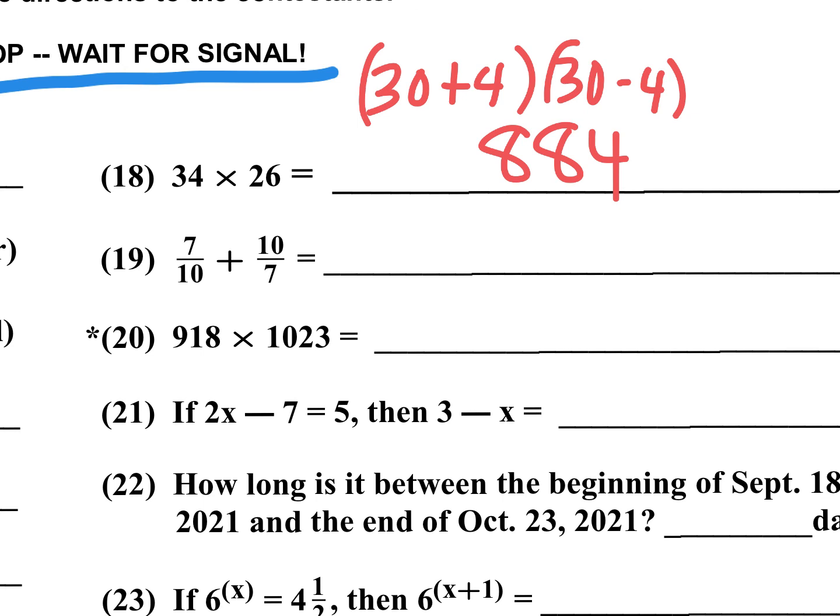Number 19 is a special shortcut. Whenever you have a number plus its reciprocal, the answer is always going to be 2 and a fraction. So I'll write down the 2. Notice the difference between the numerator and denominator is 3. So I square the 3, and I get 9. And then I multiply the denominators. 10 times 7 is 70. So the answer for number 19 is 2 and 9 over 70.